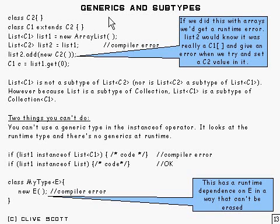A natural question to ask is about types and subtypes. What we've got here is a class C1 that extends C2, so C1 is a subtype of C2, and we're looking at lists of C1 and lists of C2.